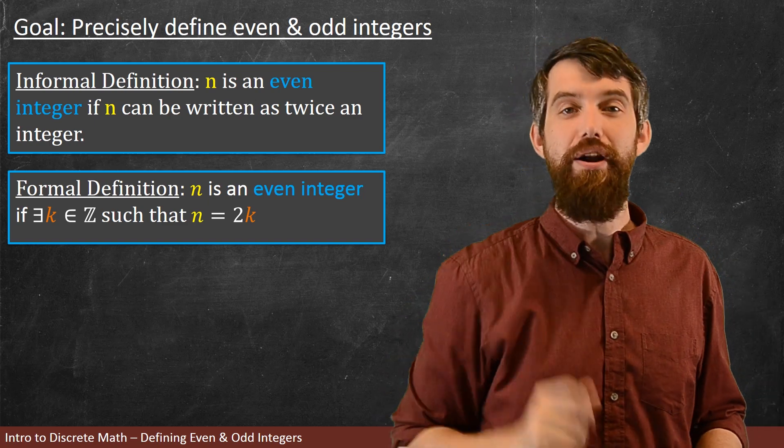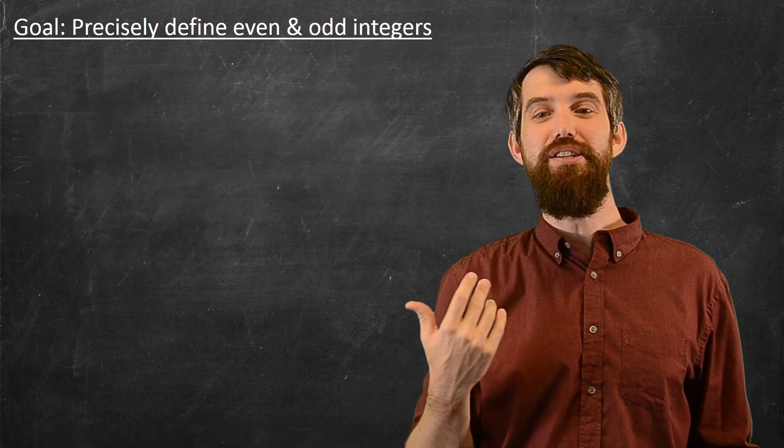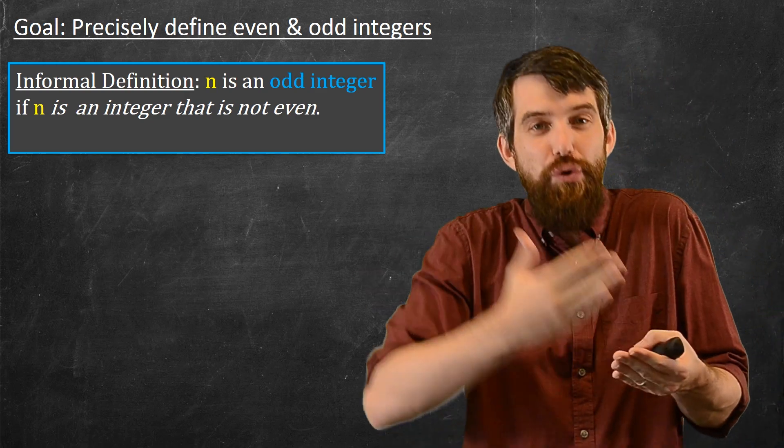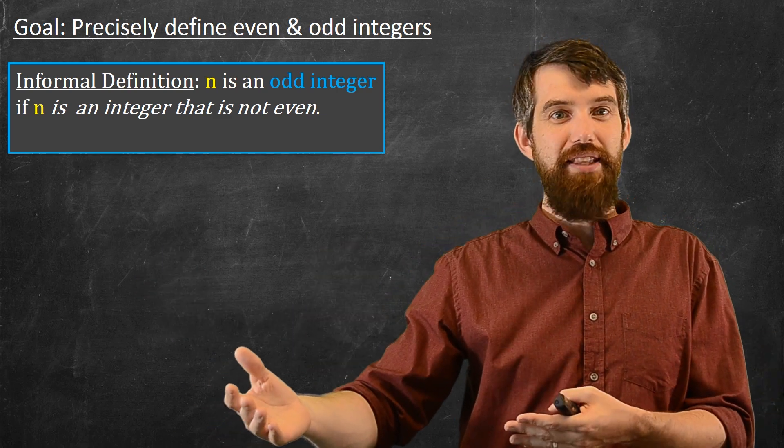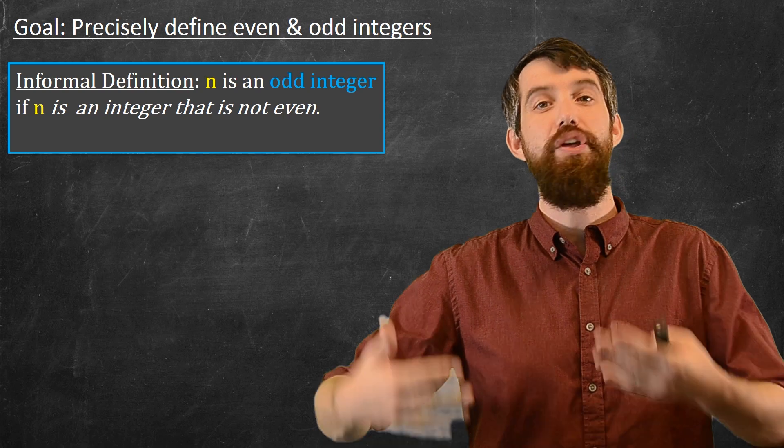Same story but for the odd integers. What's an odd integer? Informally, odd integers are the integers that are just not even. As in, if 2, 4, 6, 8 are even integers, then the other ones, the 1, 3, 5, 7s, those are the odd integers.